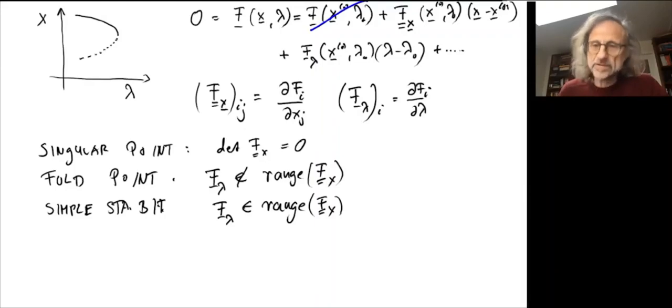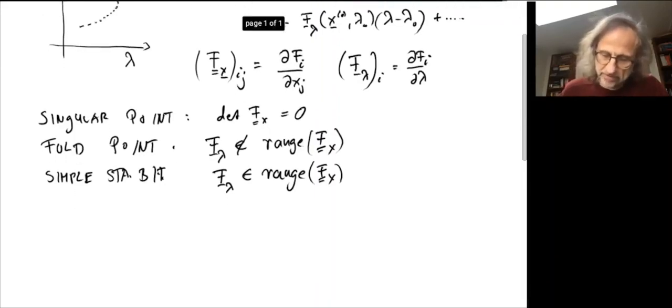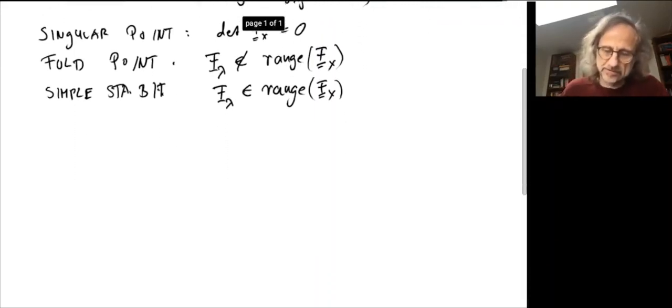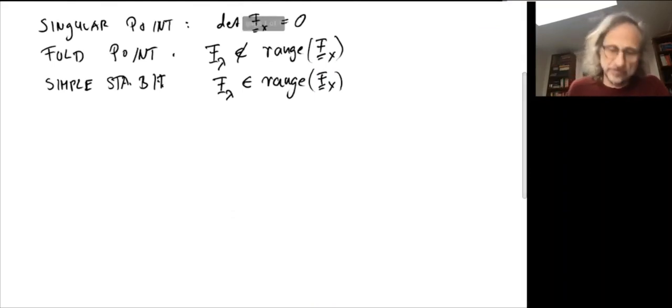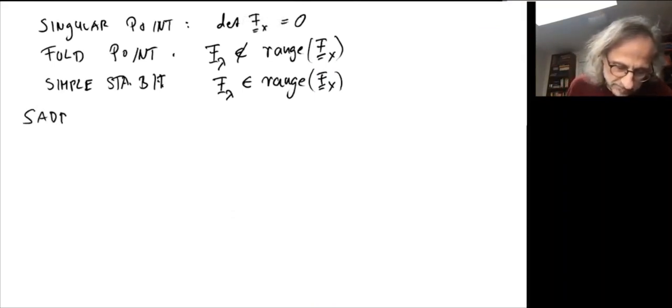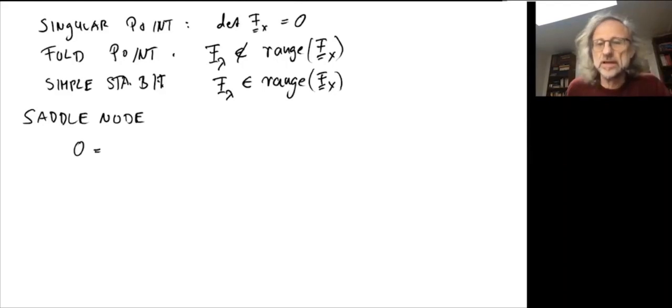Maybe we should do a simple example just to see what these notions are. Let's just do our standard scalar case where everything is very simple. So say we look at a saddle-node bifurcation, then our equation would be in the minimal case lambda plus x squared.